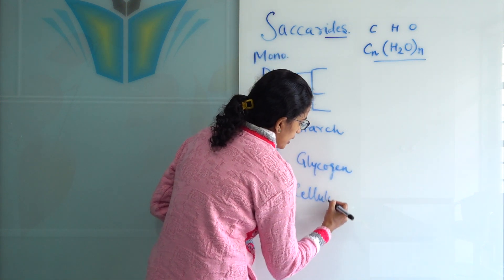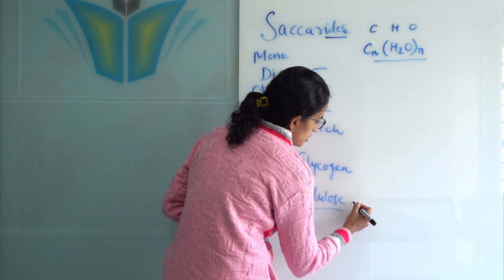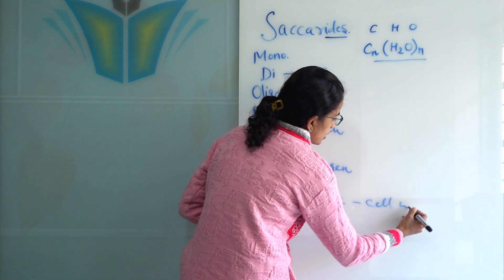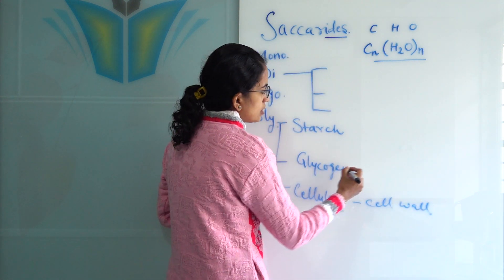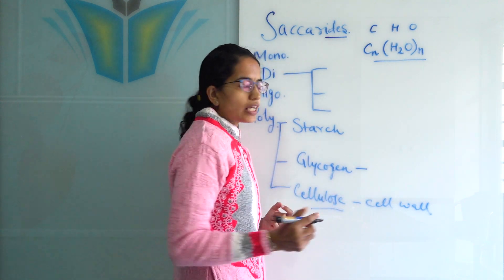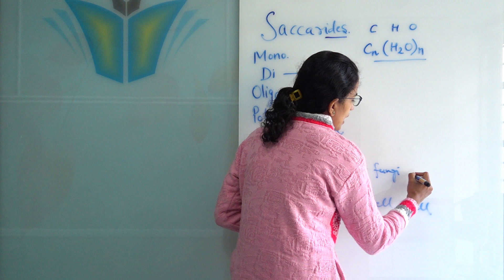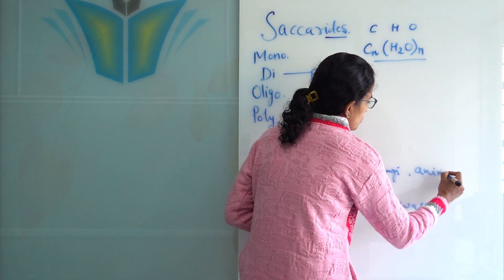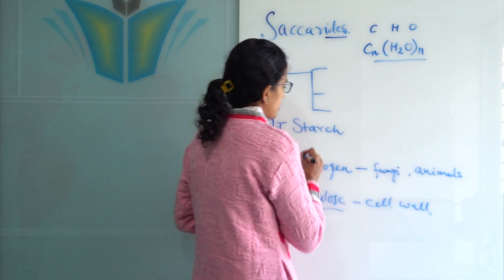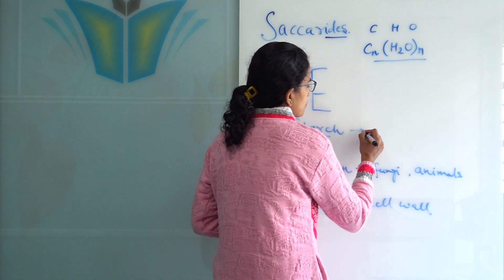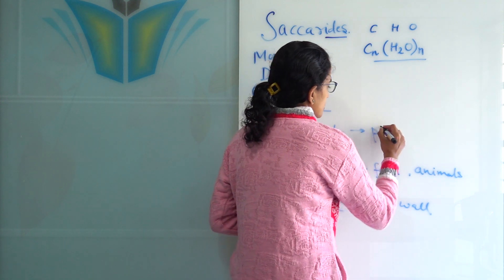Now, where are they found? So, cellulose we know is found in the cell wall of the plants. Glycogen is found as a storage in fungi and animalia. So, fungi and animalia. So, fungus and animals, you can remember that. And starch is found as a storage material in plants.